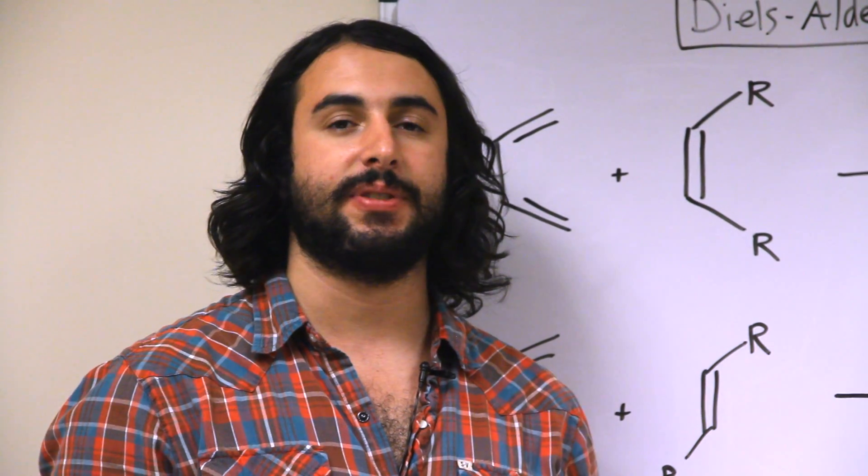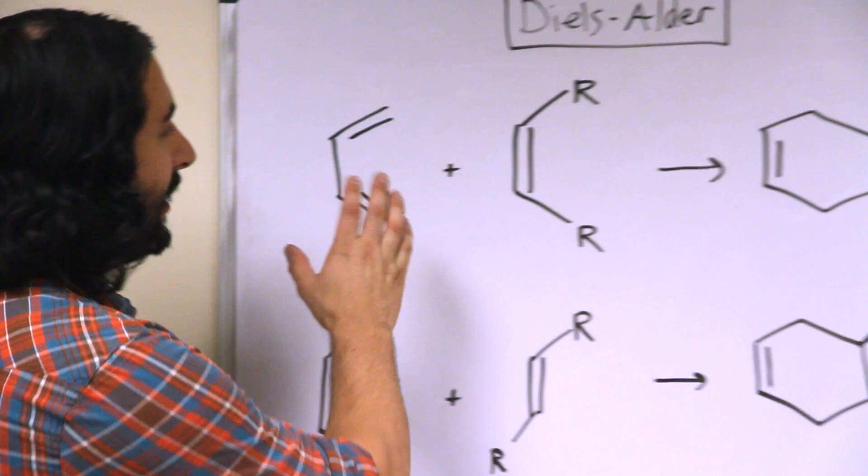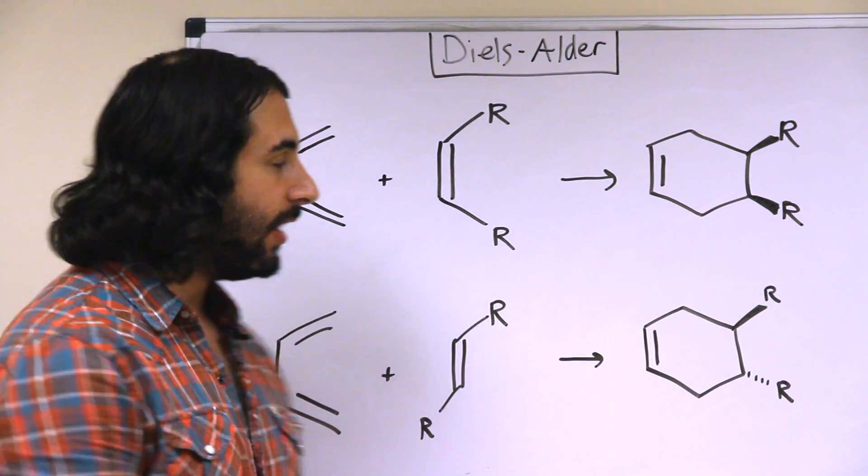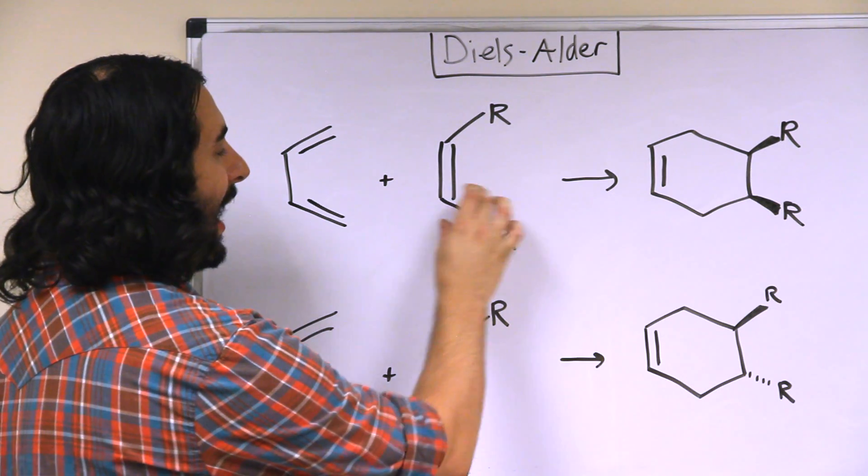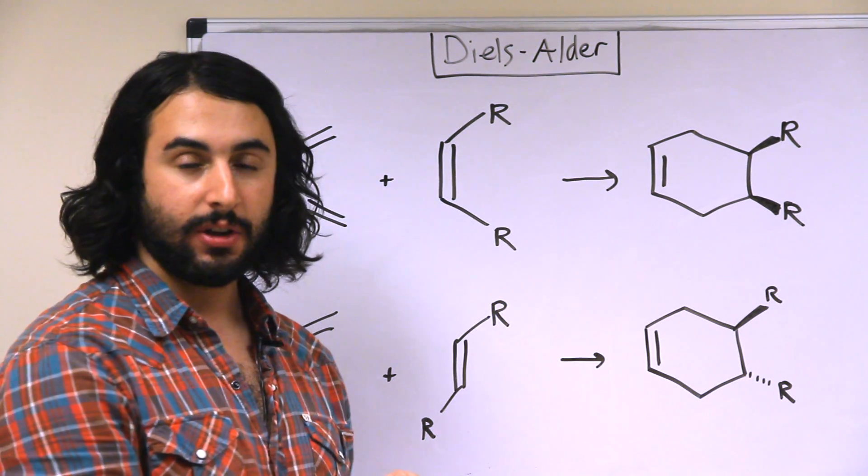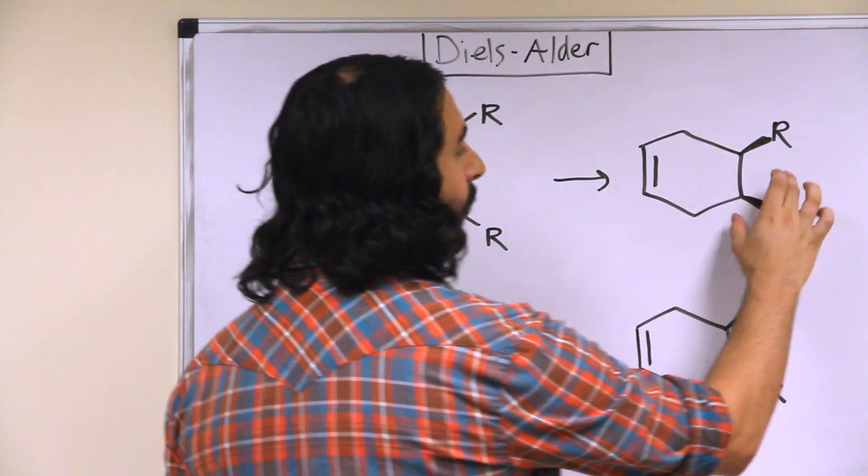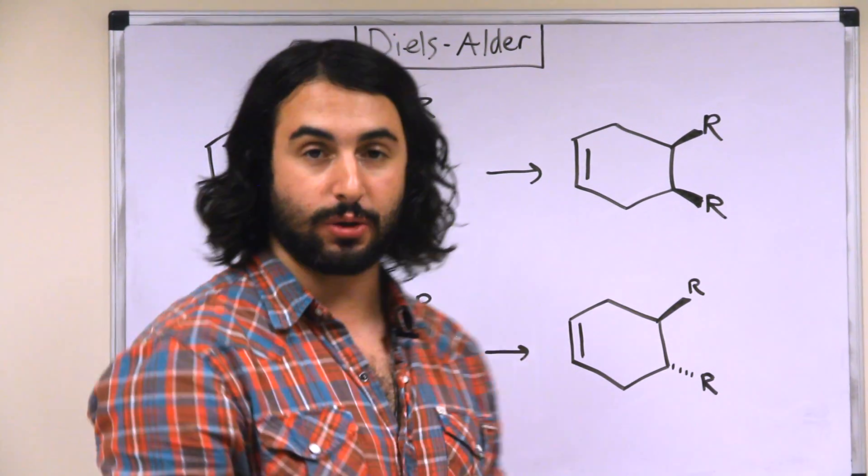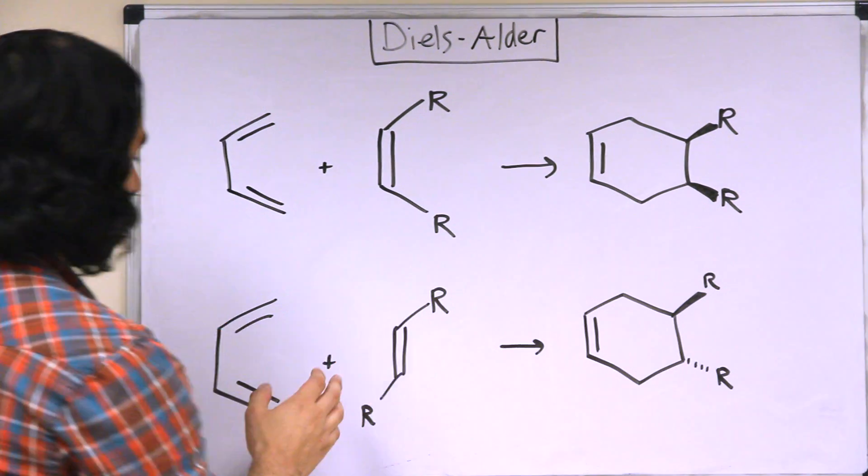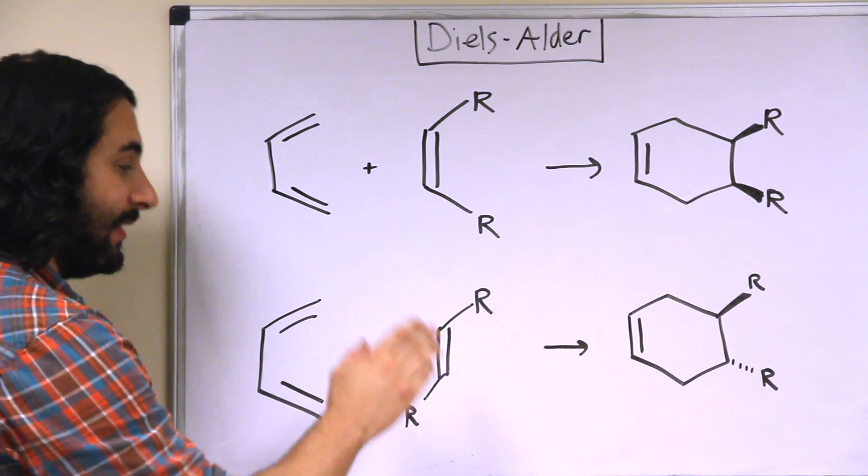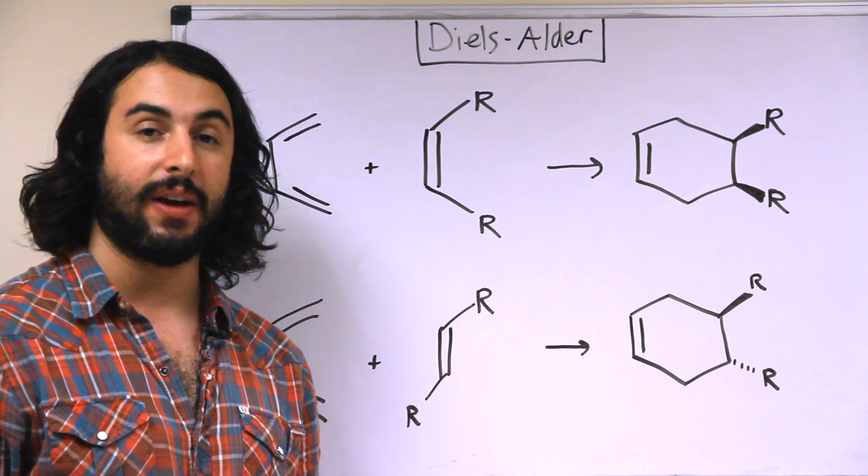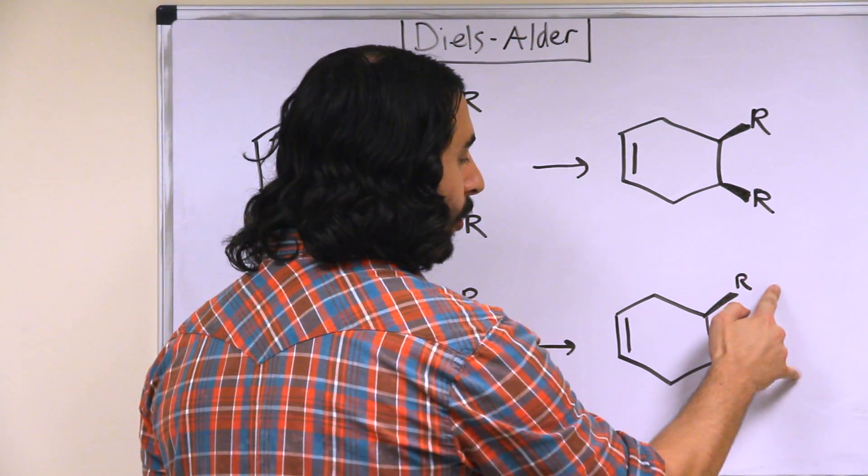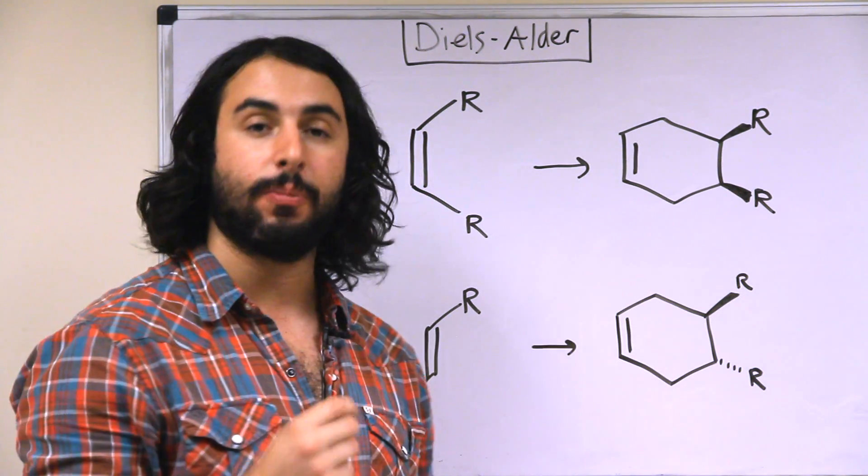So there's an element of stereospecificity to examine here. Let's say we're looking at a cis dienophile. A cis dienophile will add in syn fashion to the diene and that will result in these R groups being cis to one another on the product. Whereas if we have a trans dienophile, that is going to add in anti fashion to the diene and so that is going to give us the groups trans to one another in the product.